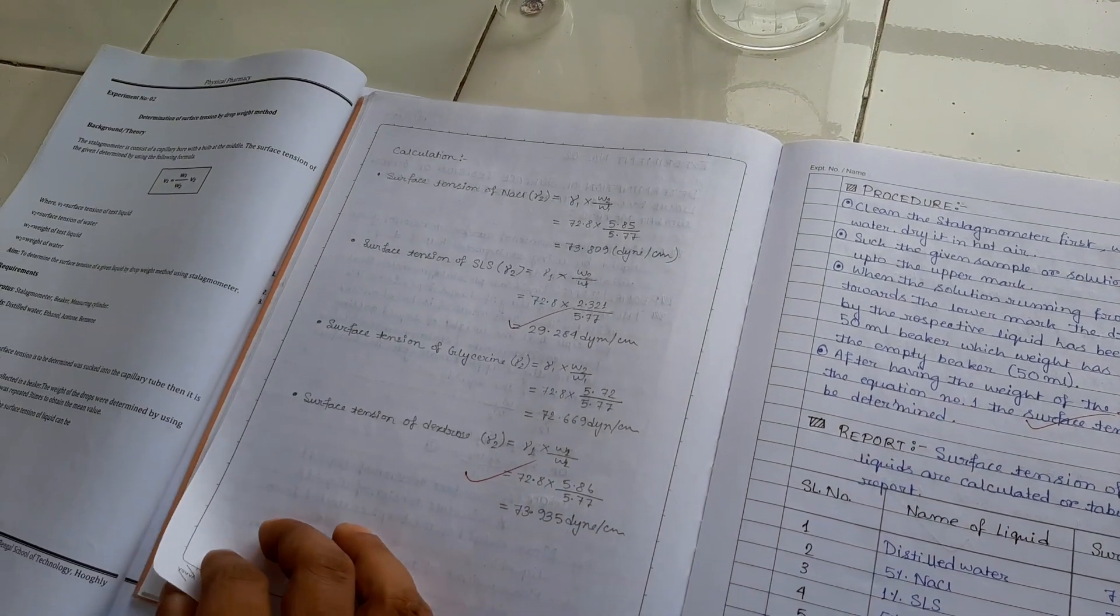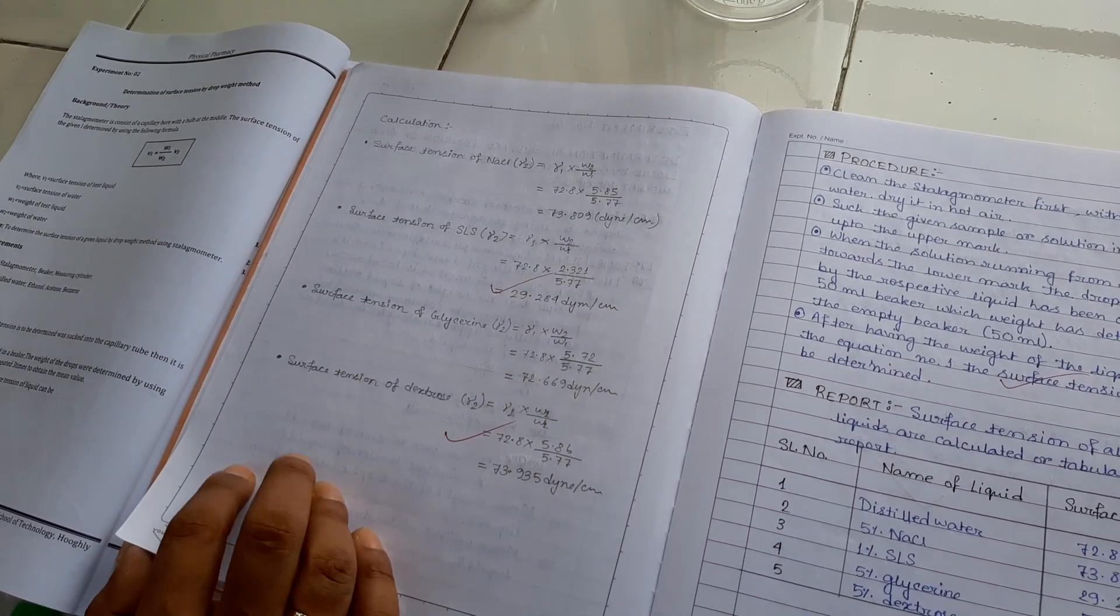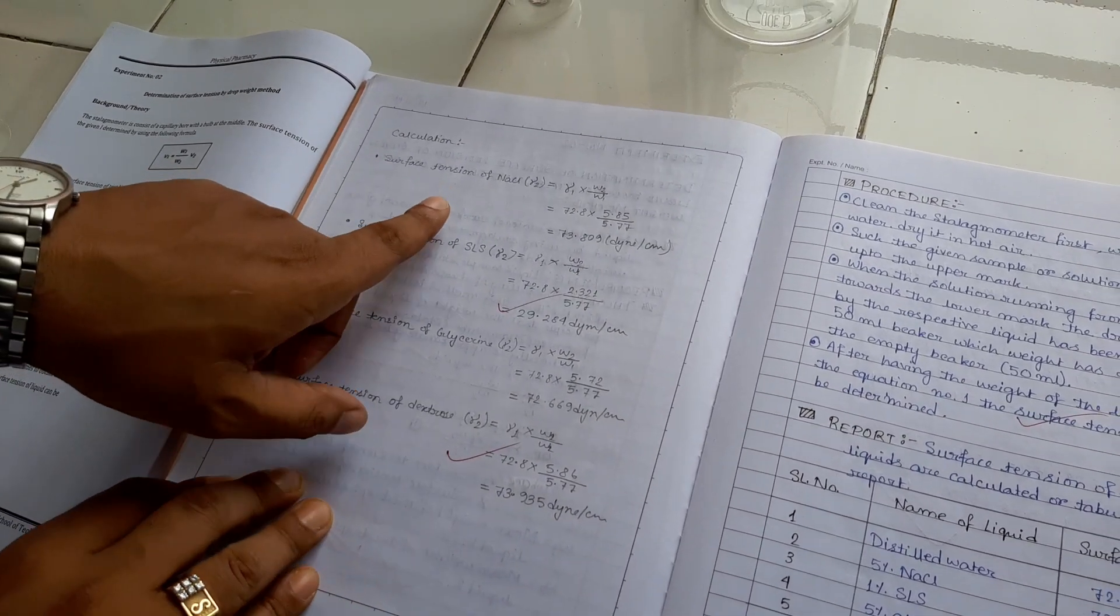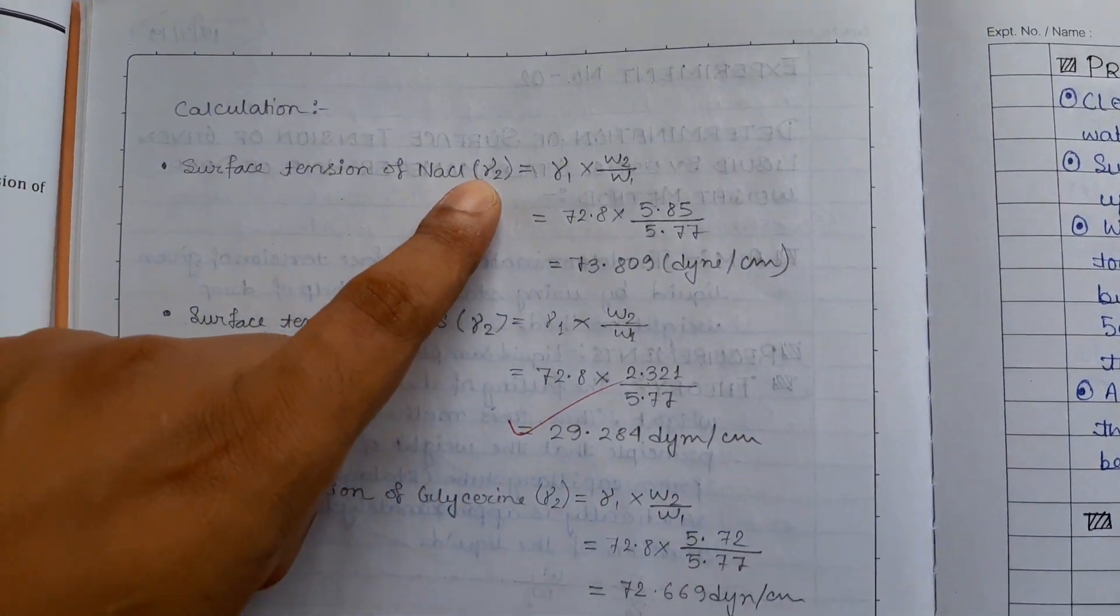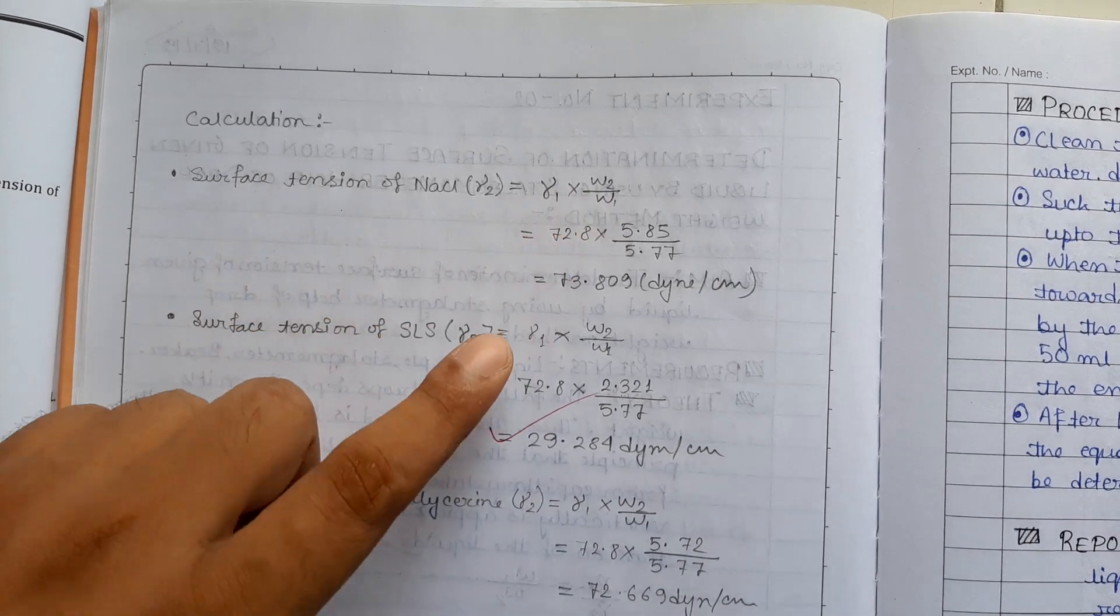So, after taking the weight, you have to calculate the surface tension. See that the formula that already we know. Gamma 2 is equal to gamma 1 into W2 minus W1.